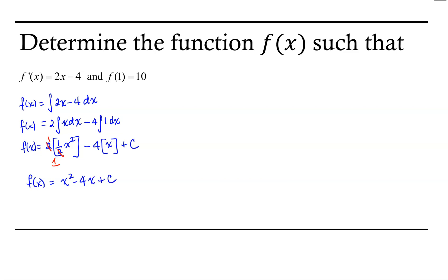We can double-check that we've met the first criteria by taking the derivative of this. Our derivative would be 2x minus 4 plus 0. So the function that we found has satisfied the first criteria.